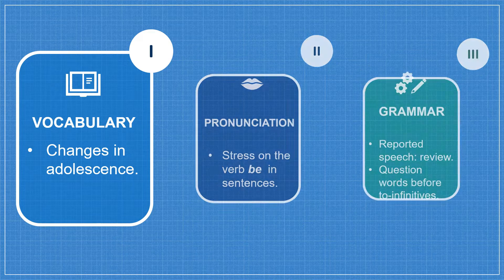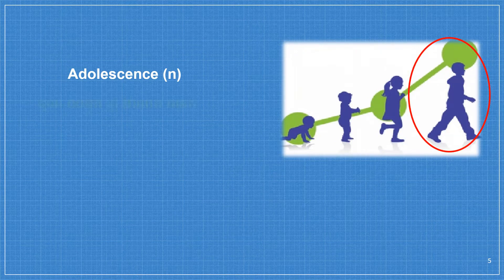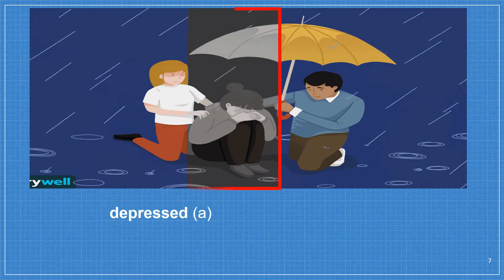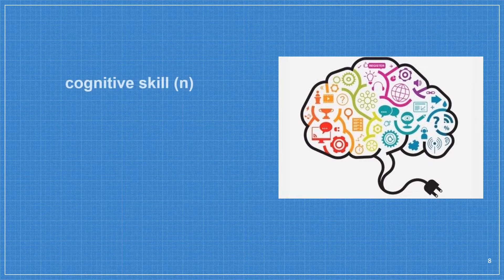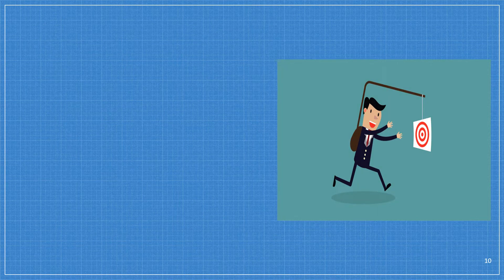Now we come to Part 1: Vocabulary. Look at the pictures, listen and repeat the words. Stress. Adolescence. Frustrated. Depressed. Cognitive skill. Conflict. Self-disciplined.